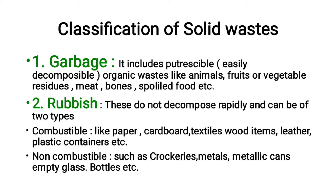The second category is rubbish. Rubbish does not decompose rapidly and can be of two types: combustible and non-combustible. Combustible rubbish includes paper, cardboard, textiles, wood items, leather, plastic containers, etc.